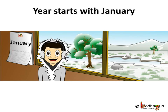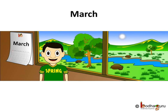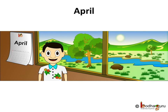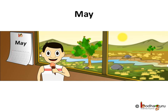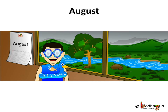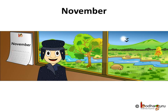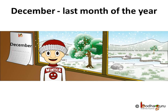There are 12 months in a year, starting from January, February, March, April, May, June, July, August, September, October, November, and the last month of the year is December. So 12 months in a year.